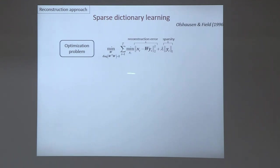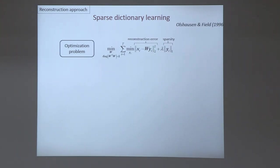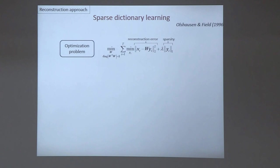The approach is based on the same normative or algorithmic framework I outlined, starting with a simple objective function. The first term is the reconstruction error: we represent each stimulus X_t as a linear combination of the dictionary times the activity vector Y_t squared. Plus an L1 norm of the activity vector, added to encourage sparsity of neuronal activity — which has been observed experimentally. You can think of this both as a sparsity-inducing regularizer and, from a physics perspective, as a metabolic cost of neural computation.